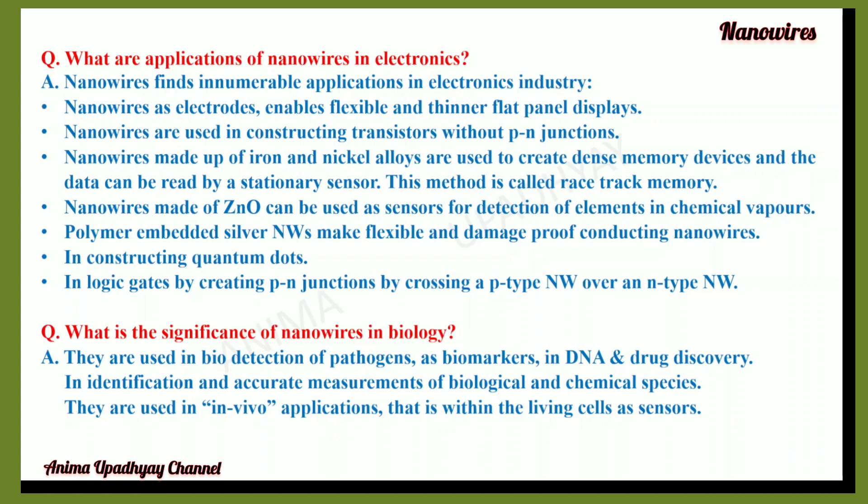What is the significance of nanowires in biology? They are used in bio-detection of pathogens as biomarkers, in DNA and drug discovery, and in identification and accurate measurements of biological and chemical species. They are also used in in vivo applications — that is, within living cells — as sensors.